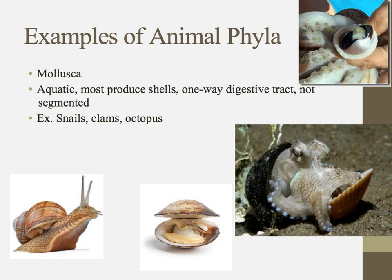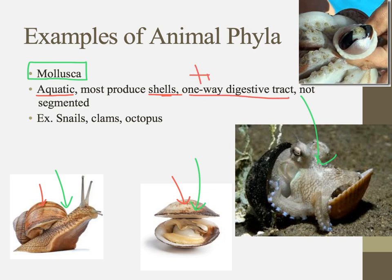All the animal phyla we discuss, except cnidarians, have bilateral symmetry. One of my favorite phyla is the mollusks — an incredibly diverse group containing things like snails, bivalves like clams, and octopuses. Those all look very different and have very different lifestyles, but they are all mollusks. They are aquatic; most produce shells like snails or clams, though not all (like the octopus). They have a one-way digestive tract — a true gut — and they are not segmented.